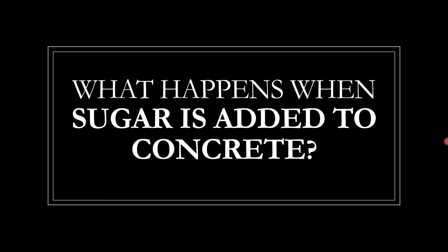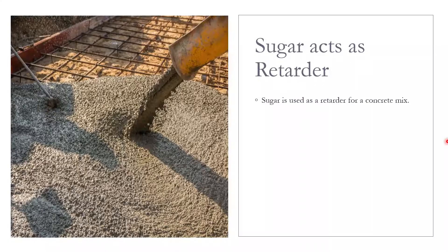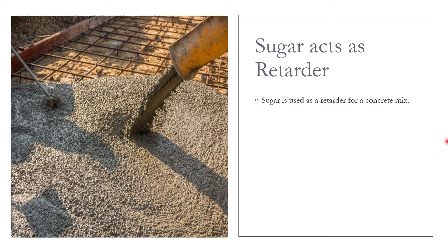Hey guys, welcome to Visible Engineers. In this video we will discuss what happens when sugar is added to concrete. So let's get started. Sugar is used as a retarder for a concrete mix. Retarders are used in a concrete mix to delay the initial setting time of the concrete.